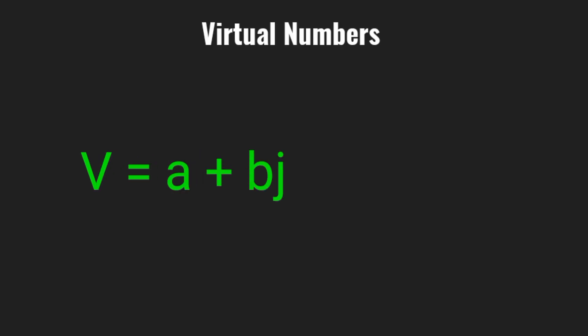So, what are virtual numbers? They are numbers built around the virtual unit j, which is defined as the natural logarithm of negative one. This means we've moved from squaring negative numbers to exploring their logarithms directly.